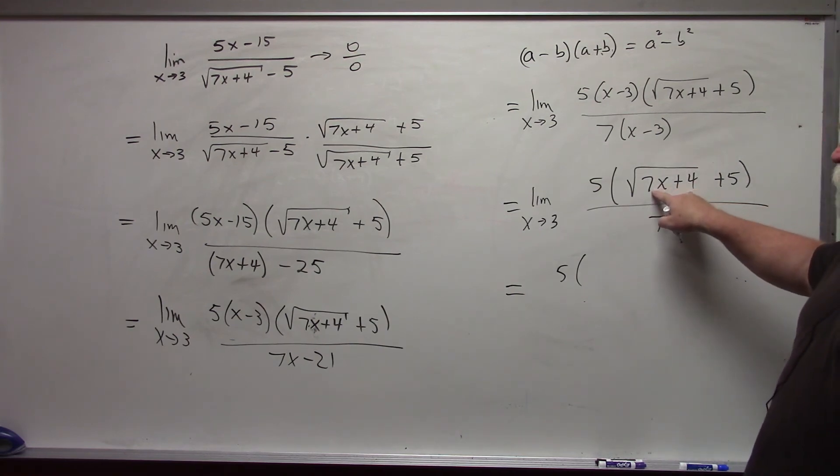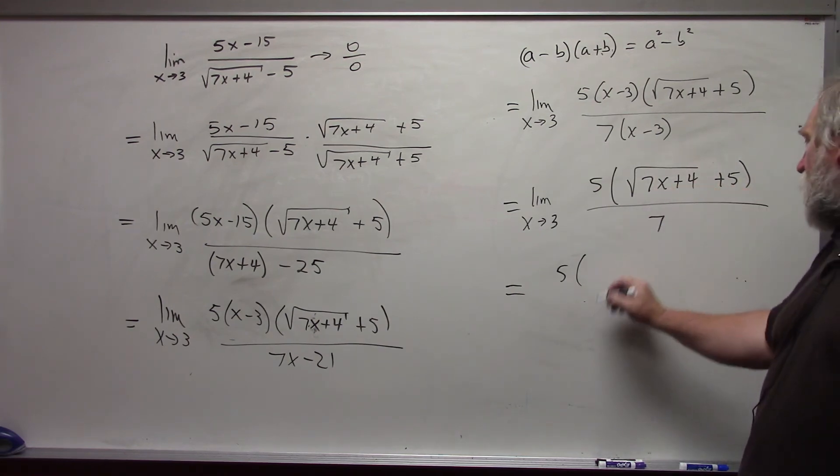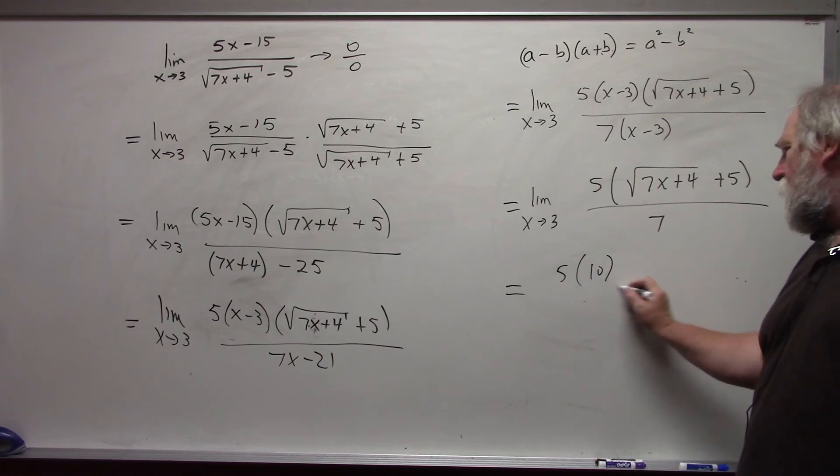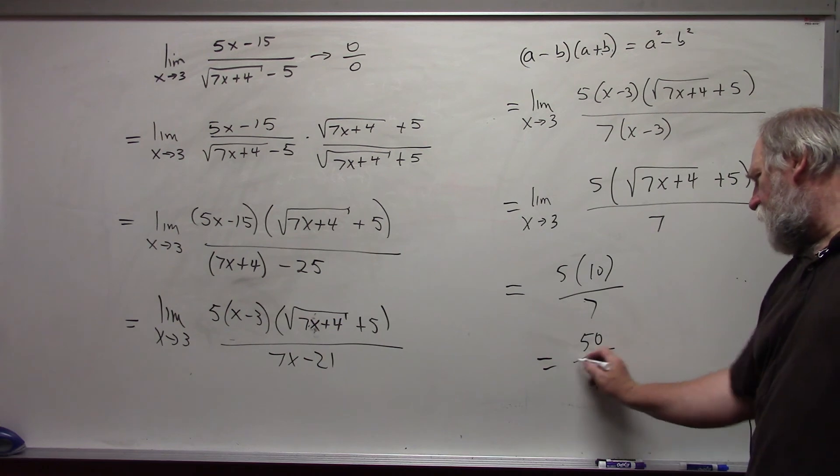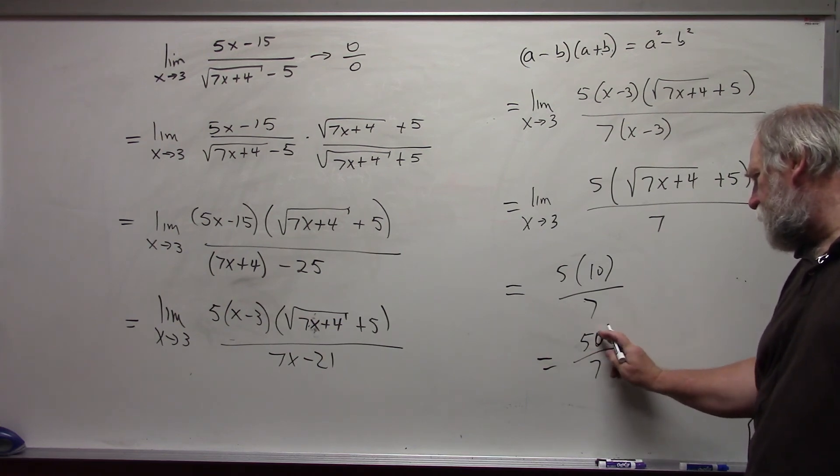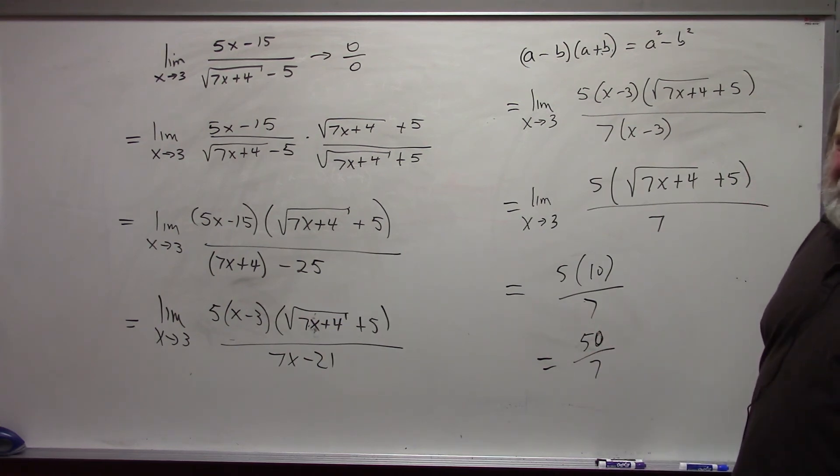This is the square root of 25, which is 5, plus 5, which is 10, all divided by 7. And then the final result is 50 over 7. That is the value of the limit.